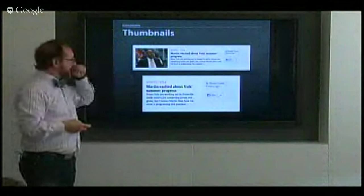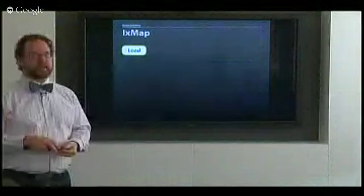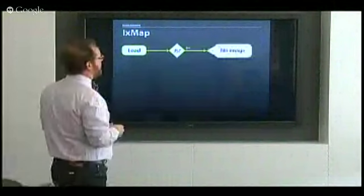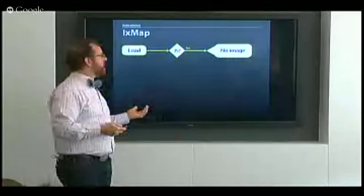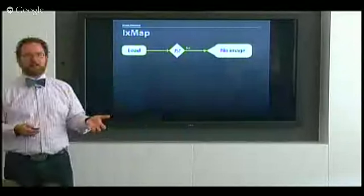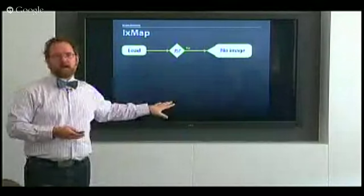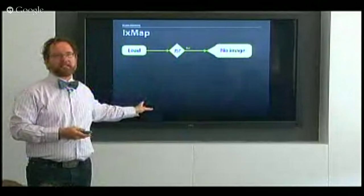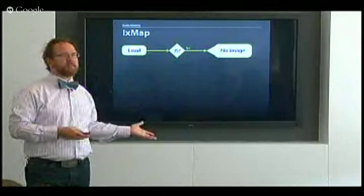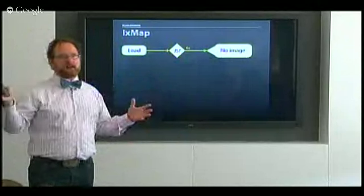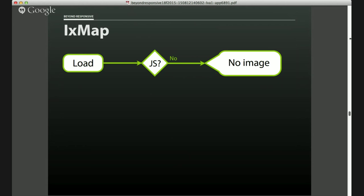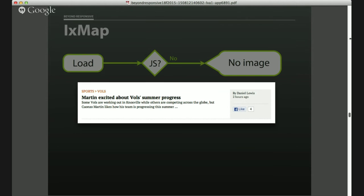On smaller screens, images aren't as necessary as on large screens — on NYTimes.com the images help your eye navigate a dense page, but on a small screen you don't have that same competition. If we do have JavaScript, we verify browser width — maybe at least twice as wide as the thumbnail so we don't get weird wrapping when it's floated. If the condition isn't met, we don't load the image. If it is met, we adjust the markup and lazy-load the image.